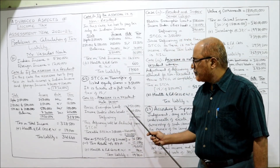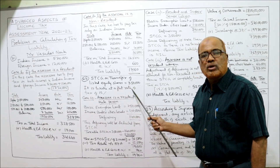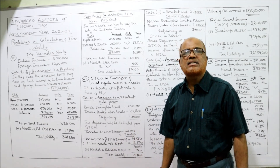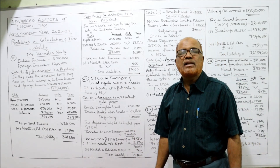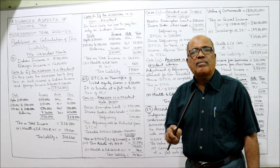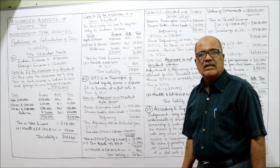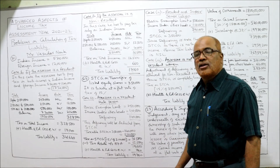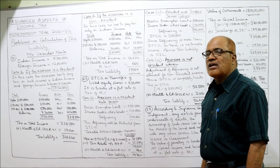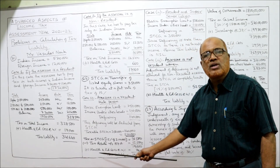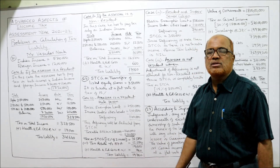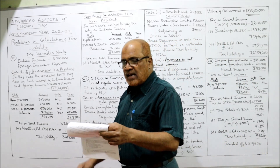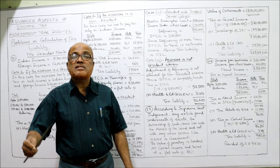The assessee can avail tax rebate under section 87A because total income is below ₹5,00,000. The rebate is the least of actual income tax or ₹12,500. Actual tax is ₹31,500, so ₹12,500 is deducted, leaving ₹19,000. Adding 4% health and education cess — tax liability is ₹19,760. First case completed.